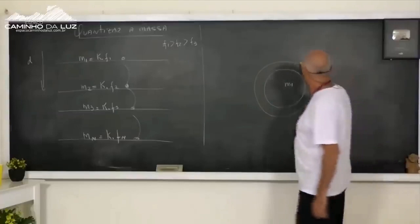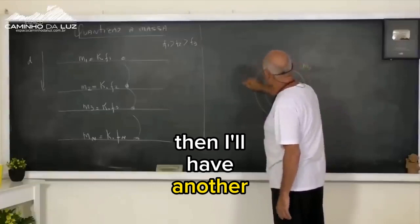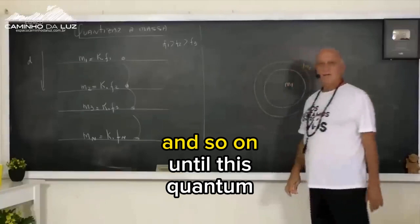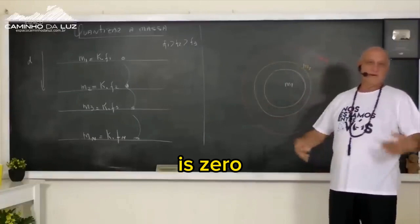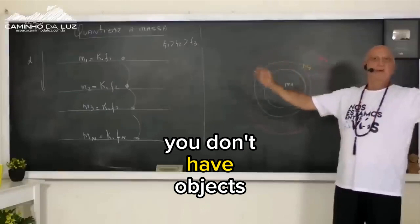And the cycle continues. Then I'll have another surface of matter M3, and so on, until this quantum scale of division ends where the lowest frequency is zero. When it stops vibrating, you don't have particles anymore, you don't have objects, you only have a condensed field.